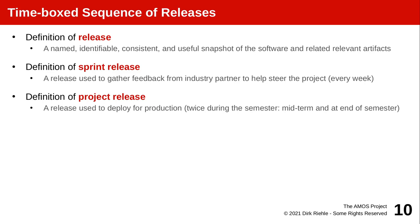So what is a release? It's useful software that actually does something helpful to a customer — a named, identifiable, consistent, and useful snapshot of what you're developing. At the end of each one-week sprint, there is a sprint release. After 6-7 weeks for each project stage, there is a project or product release, which is expected to be of higher quality than the sprint release, because there are only two. The assumption is that the product release can be deployed to production, meaning it has sufficiently high quality.